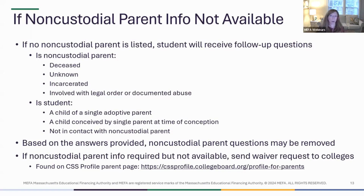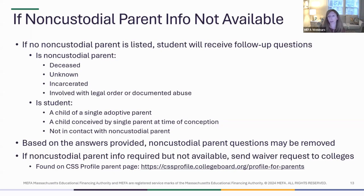Based on the answers provided, that requirement might be removed. But if the profile and the colleges are still requiring non-custodial parent information, there's an option to submit a waiver request — there's a profile page where you can fill out a form. It's also good to communicate with the college directly. If they're saying they need the non-custodial profile and you can't provide it, explain your situation and find out whether they want a waiver request form, a letter, or an email. Then they'll make a decision on whether they can waive that requirement.